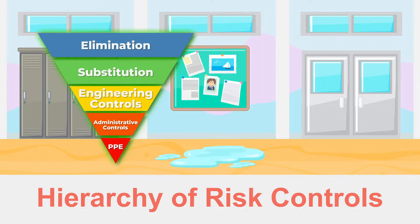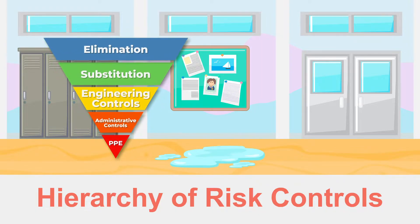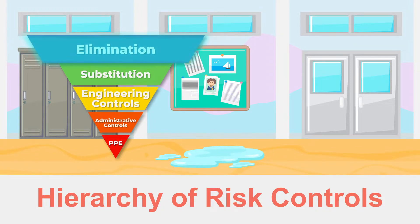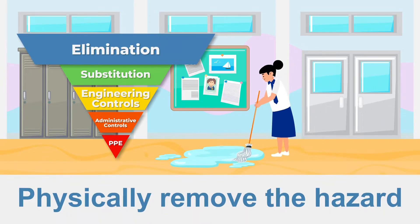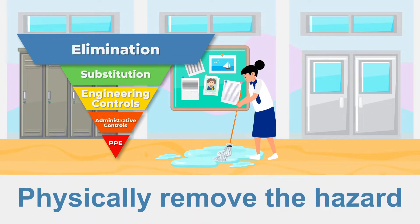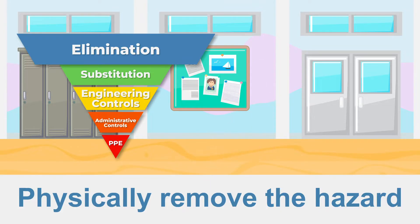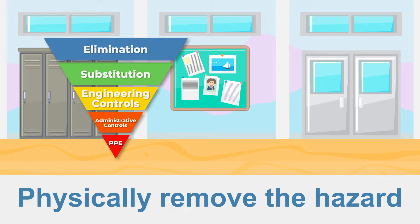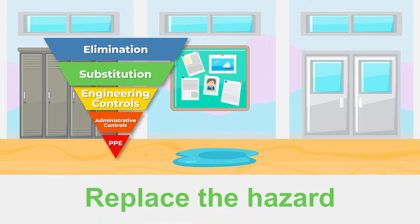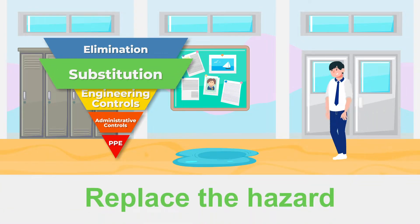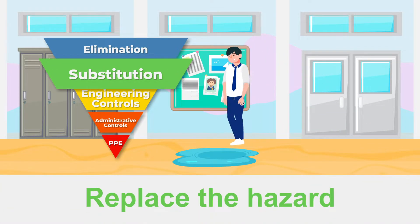If we apply the hierarchy of risk controls to the example of the wet floor, the safest way to deal with that situation is to apply elimination — remove the hazard altogether. Eliminate the slipping hazard by mopping up the puddle of water on the floor. And if elimination is not possible, we should consider the second option, which is substitution: walking an alternative path that is dry.